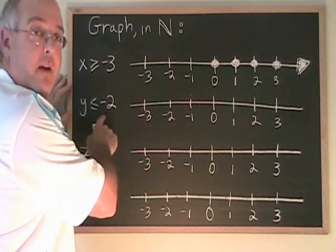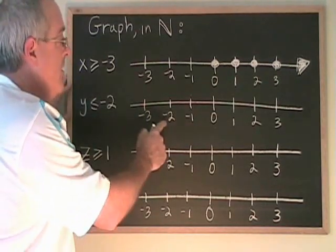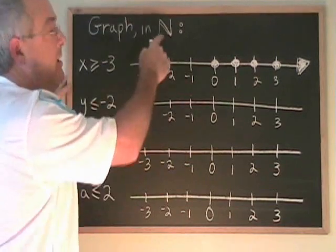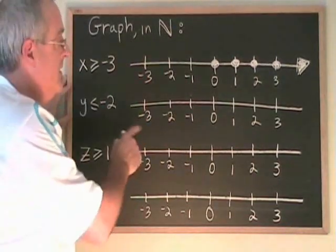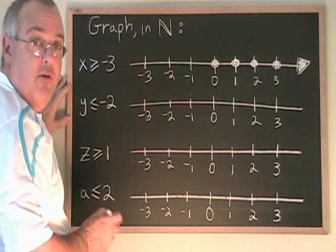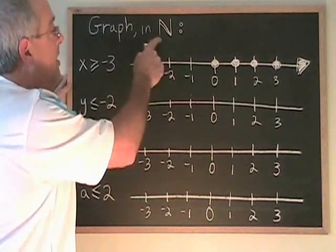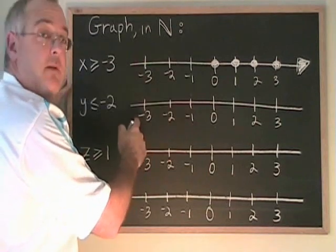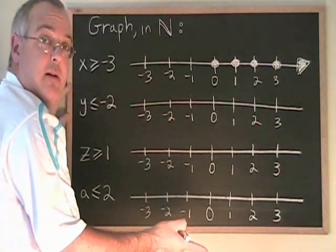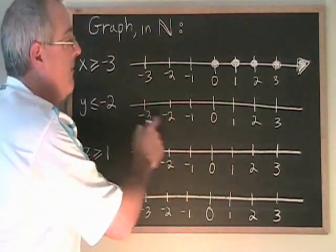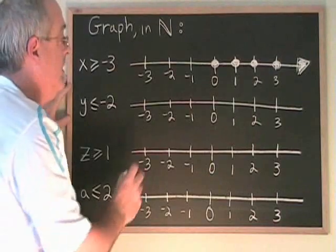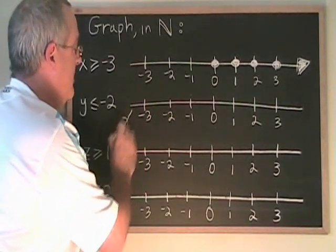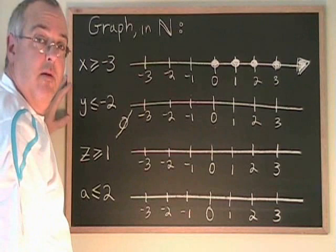y less than or equal to negative 2 would include the numbers over here, but again, these negative numbers are not natural numbers. So this might seem like a trick question, but there are no natural numbers that are less than or equal to negative 2. So the answer is empty set — there are none. We can leave a blank number line to express this, or we can use the empty set symbol, which is this circle with a line through it.